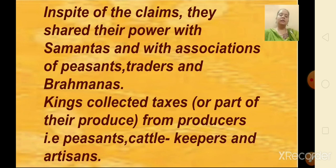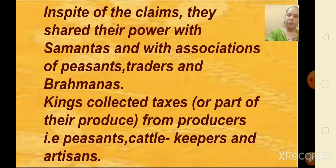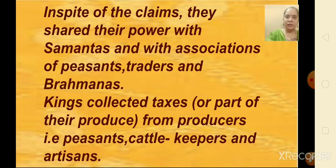The kings collected taxes or part of their produce from the producers — that is, peasants, cattle keepers, and artisans. In each of these states, resources were obtained from producers who were often persuaded or compelled to surrender part of what they produced. Sometimes these were claimed as rent due to the lord who asserted that he owned the land.